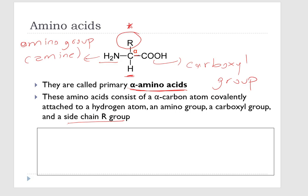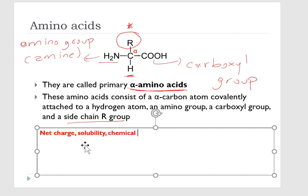Based on that, the physicochemical properties of amino acids — such as net charge, solubility, chemical reactivity, and hydrogen bonding potential — are all dependent on the chemical nature of the R group.